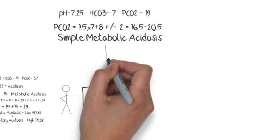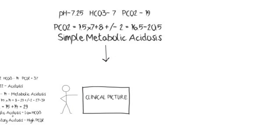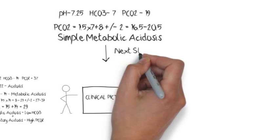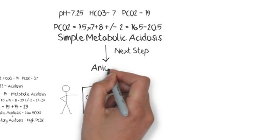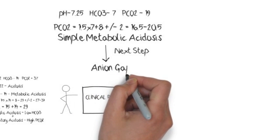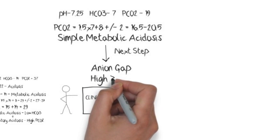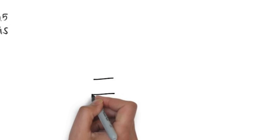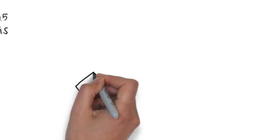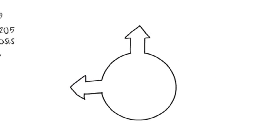After diagnosing simple metabolic acidosis, the next step is to evaluate the cause, and the first thing to check is the anion gap. If the anion gap is high — greater than 20 in this case — we look at the causes of high anion gap metabolic acidosis.